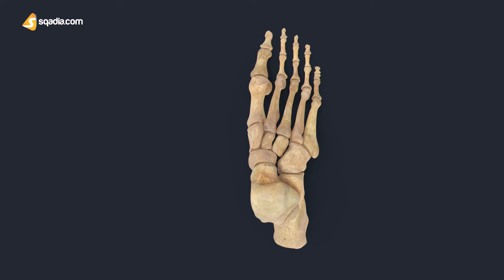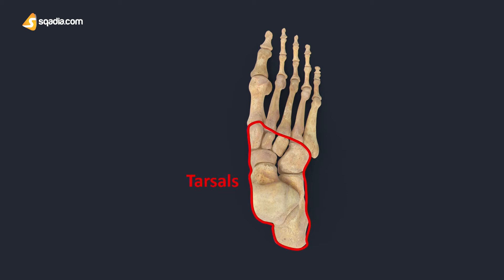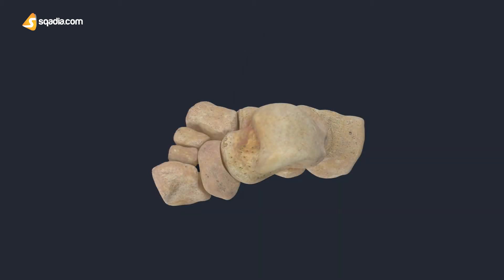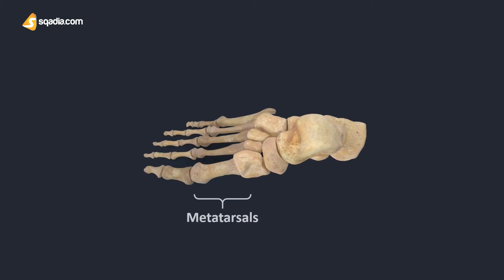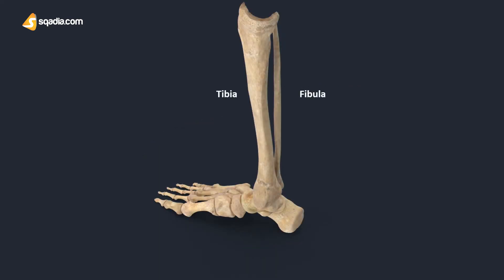The human foot basically has three parts: the forefoot, the midfoot, and the hindfoot. Present among the mid and hindfoot are the tarsal bones, which are a group of seven bones that are irregular in shape making up the ankle region. The word tarsus is associated with these bones. Distally, they articulate with the metatarsal bones of the foot forming the tarsometatarsal joint. Proximally, together with the tibia and fibula bones, they form the ankle joint.